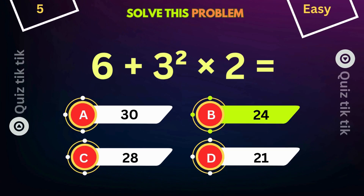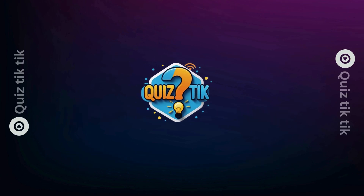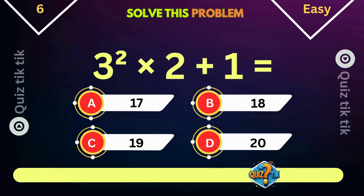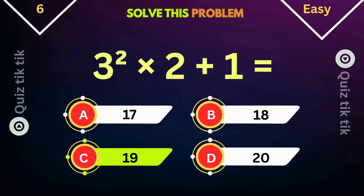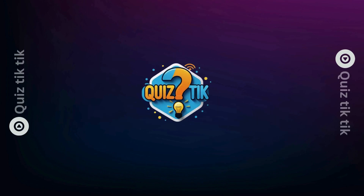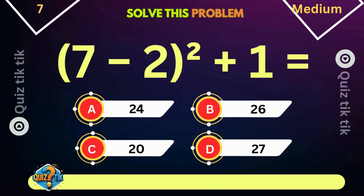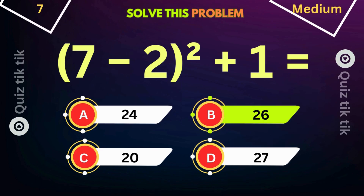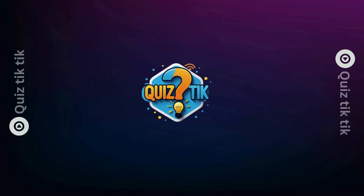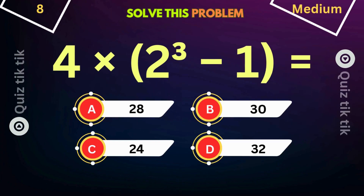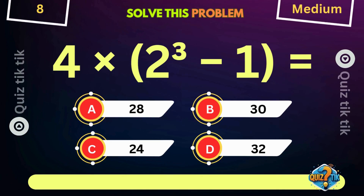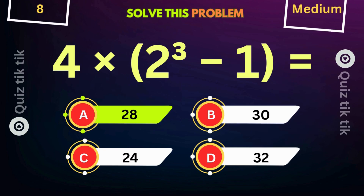What is 6 plus 3 squared minus 4? What is 3 squared times 2 plus 1? What is the value of 7 minus 2 squared plus 1? What is 4 times the quantity of 2 cubed minus 1? What is 4 times the quantity of 2 plus 1?